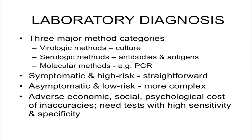We need tests that pick up infection as early as possible, and this has led to a fundamental shift in the philosophy of testing. There are three major categories of tests: virologic methods (essentially culture), serologic methods (antibodies and antigens), and molecular methods (PCR tests, viral loads). In the symptomatic high-risk patient, this is usually pretty straightforward. For the asymptomatic low-risk patient, it's more complex. Under the old philosophy, because an HIV diagnosis could have big economic, social, and psychological consequences, specificity was the coin of the realm.